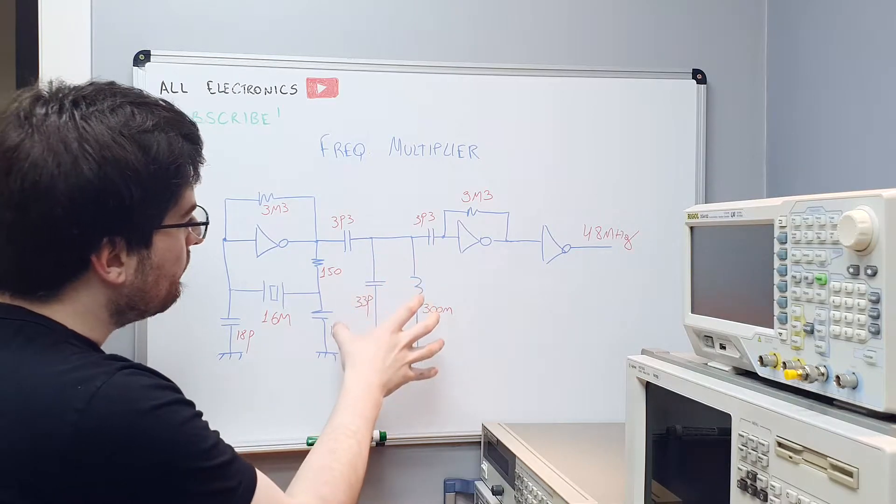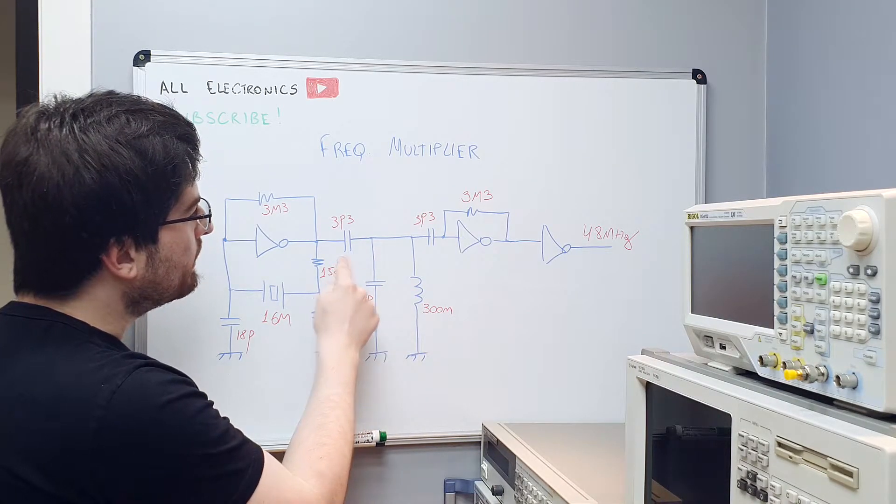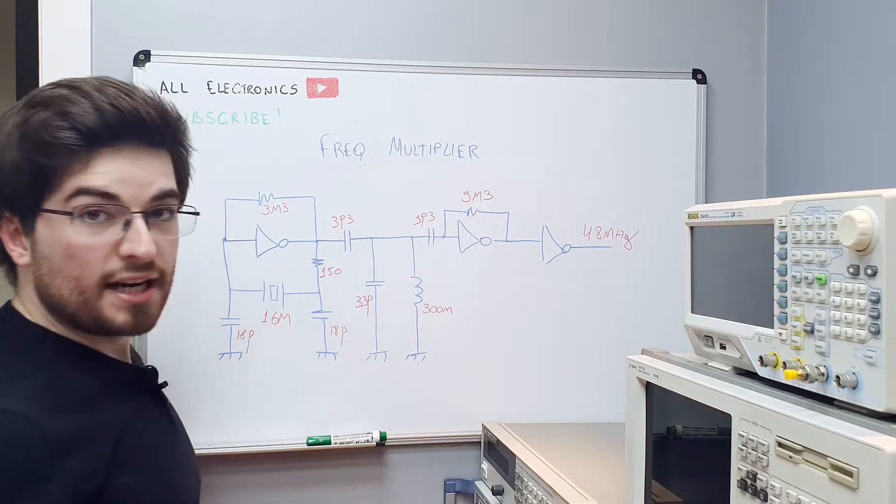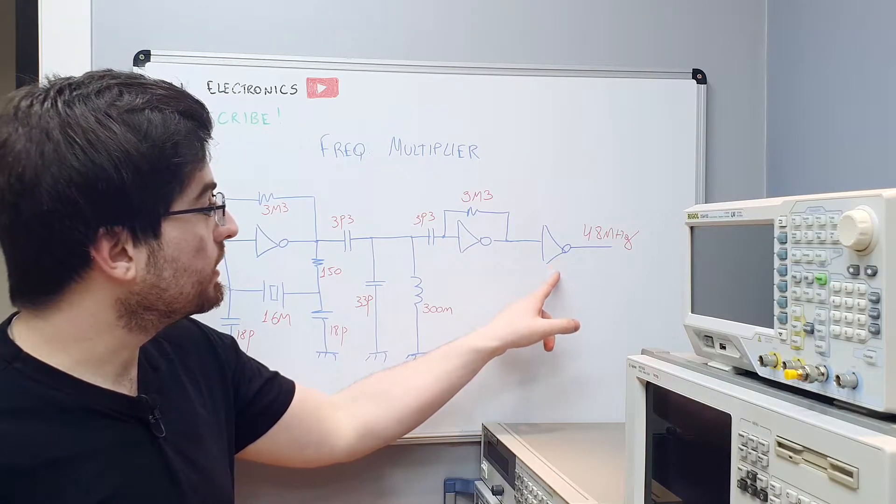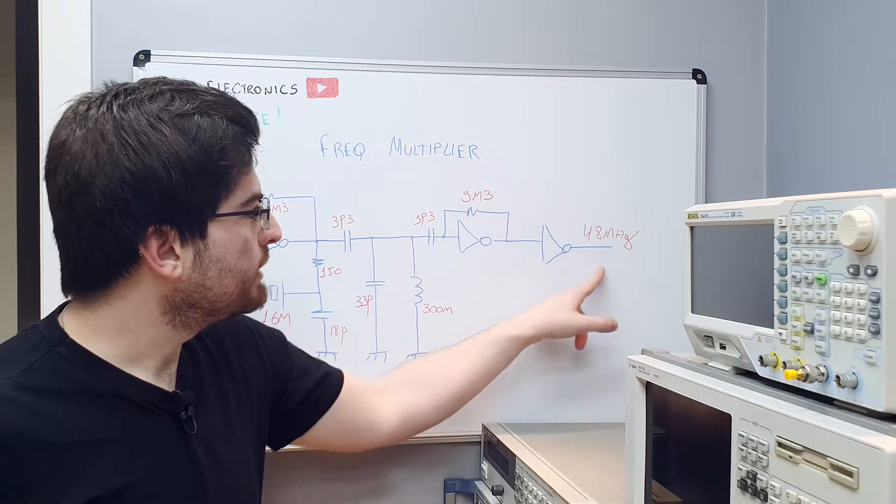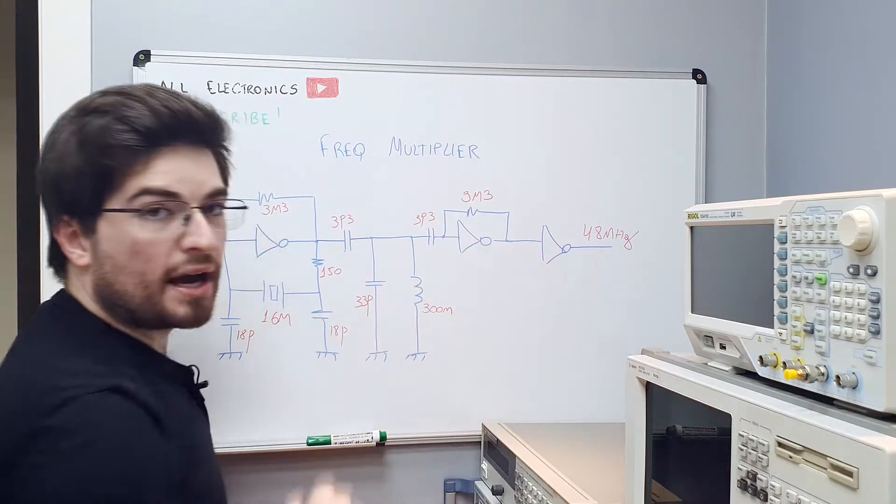Here we have the bandpass filter, it's a parallel tank LC tank that's coupled by AC capacitors here. This is a linear CMOS amplifier that we studied in the last videos. In this prototype I went with output square wave, so here I used another gate to take the signal and square it up to get a very nice square wave on the output. So we have a crystal that is 16 megahertz and here 48 megahertz on the output.